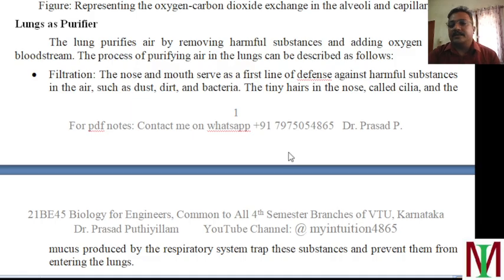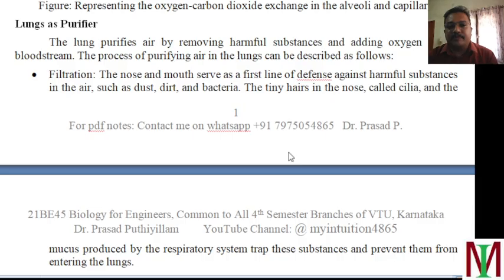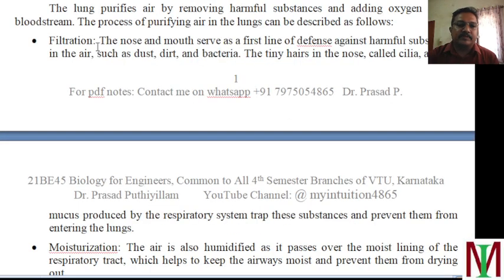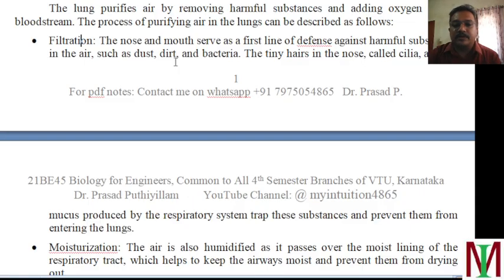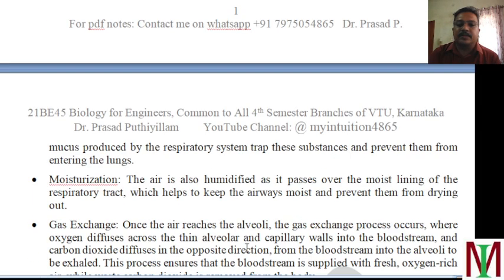The lung purifies air by removing harmful substances and adding oxygen to the bloodstream. The process of purifying air in the lung can be described as follows: filtration — the nose and mouth serve as the first line of defense against harmful substances in the air such as dust particles, dirt particles, or bacteria. The tiny hairs in our nose called cilia and the mucus produced by the respiratory system trap these substances and prevent them from entering the lung.